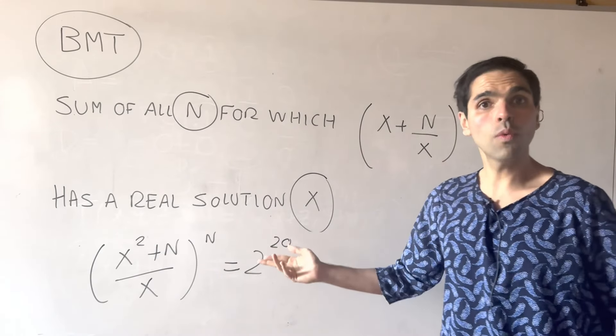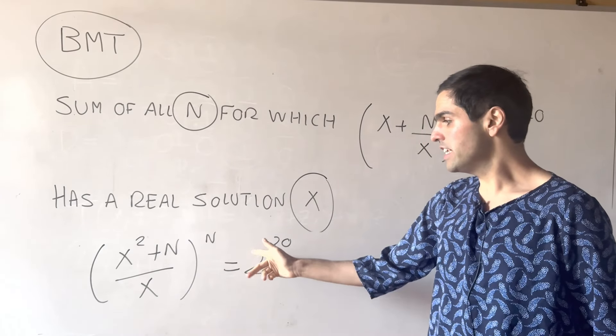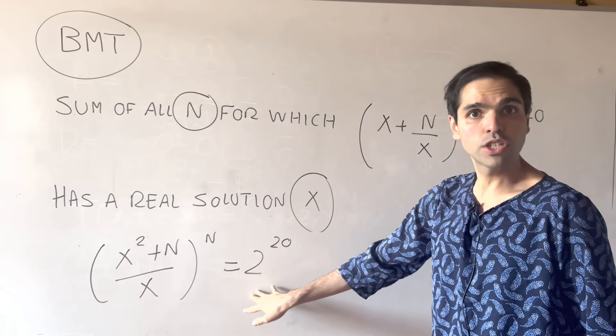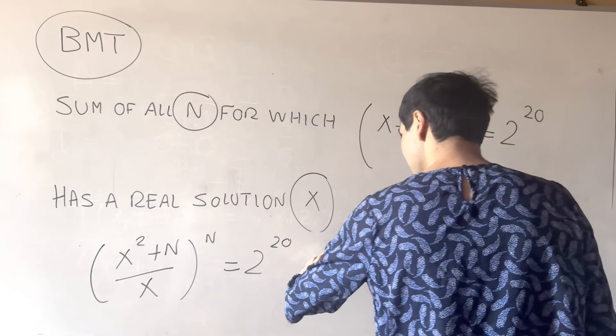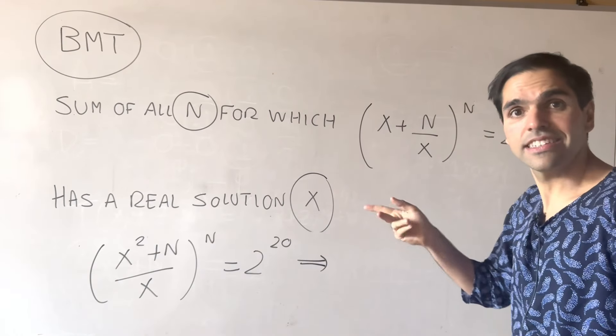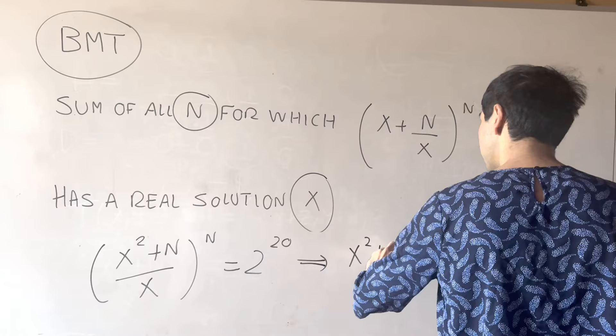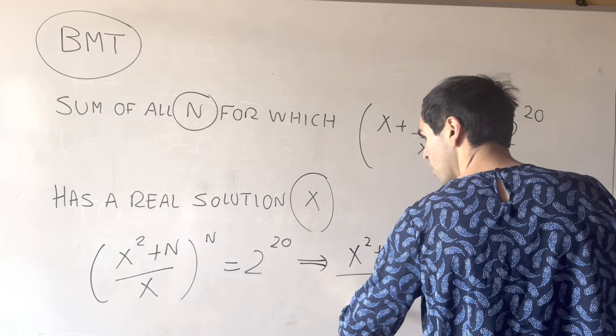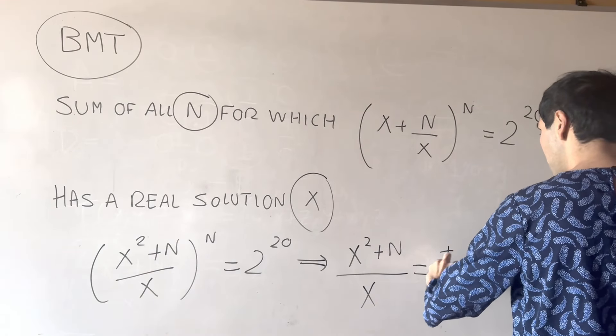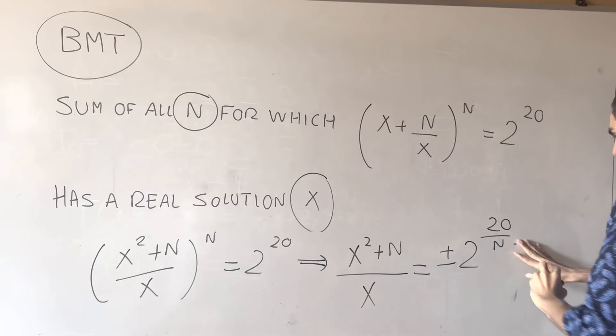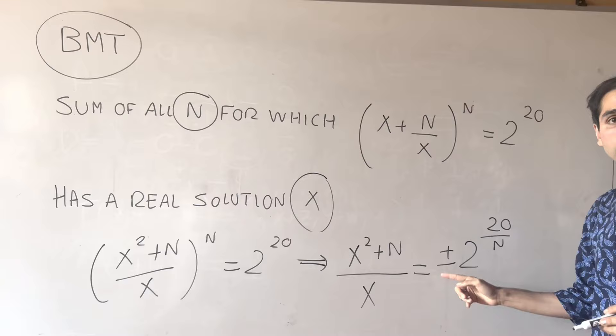And then you want to take nth root, so if n is even, we have plus minus, if n is odd, we just have plus. You will see in the end, this sign doesn't matter, so with abuse of notation a little bit, we'll just write this as (x^2 + n)/x is plus minus 2^(20/n).